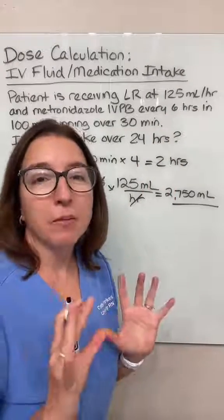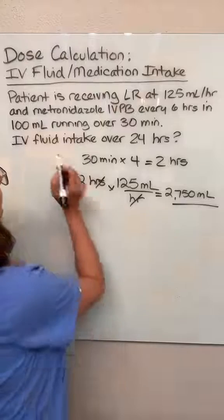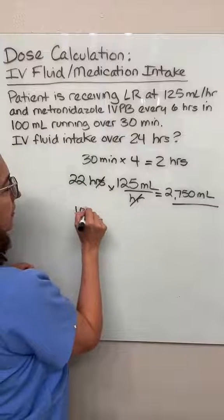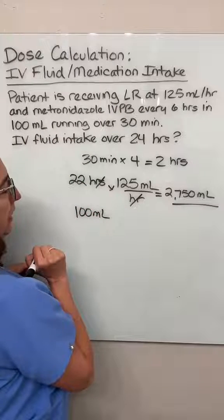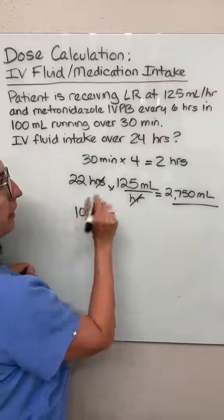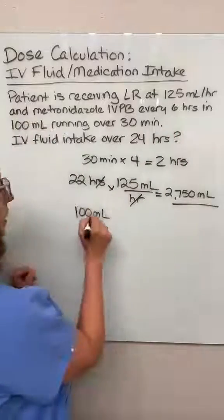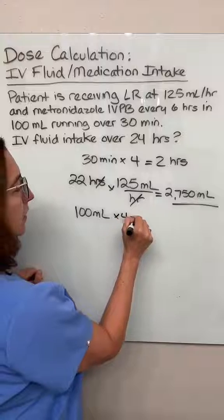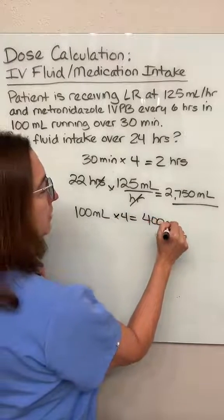And then from their IV piggyback, they are getting 100 milliliters each time they receive their medication. And they're getting their medication every six hours, four times a day. So 100 milliliters times four equals 400 milliliters.